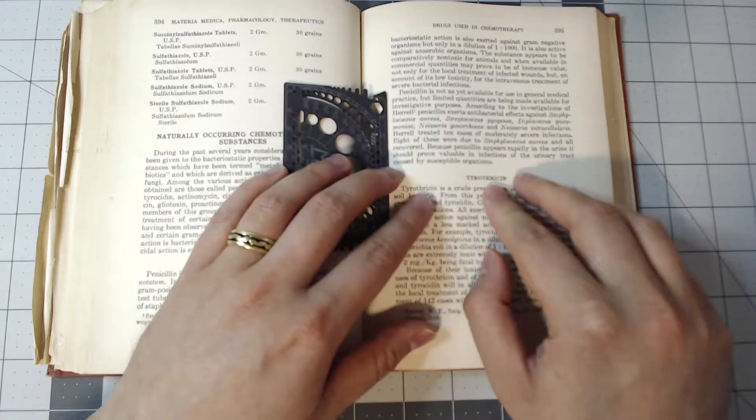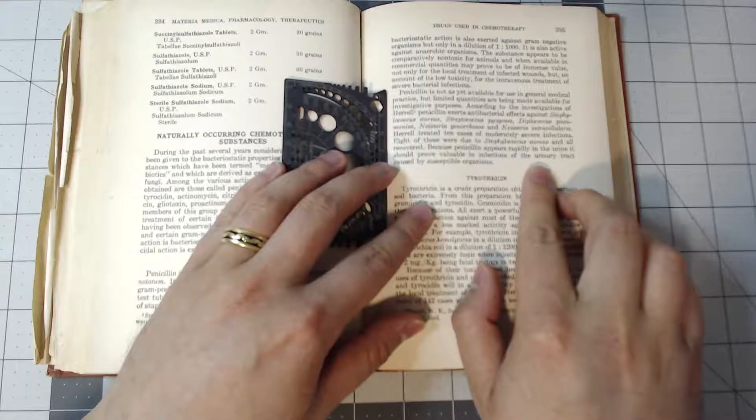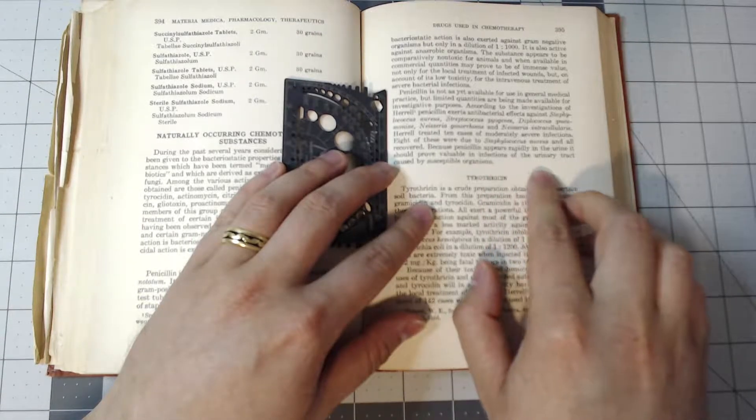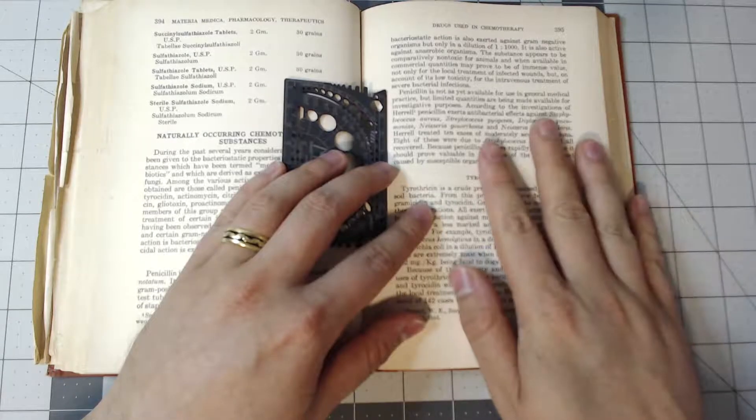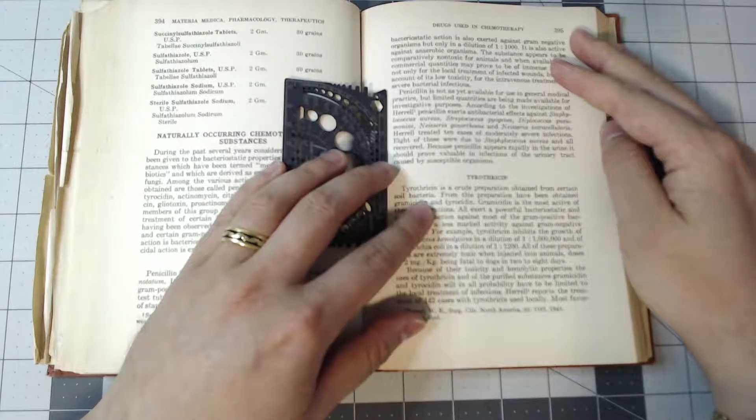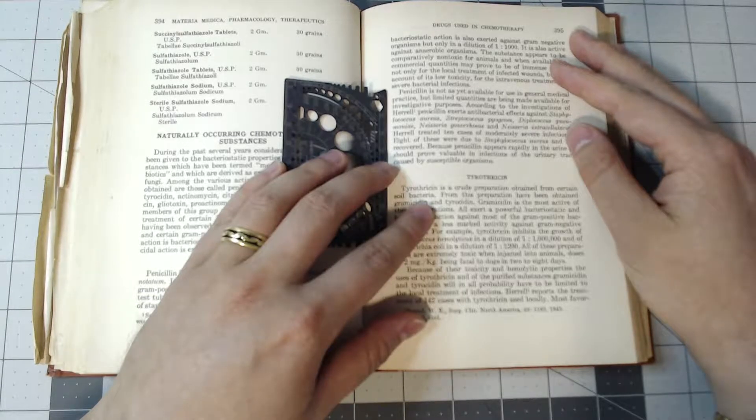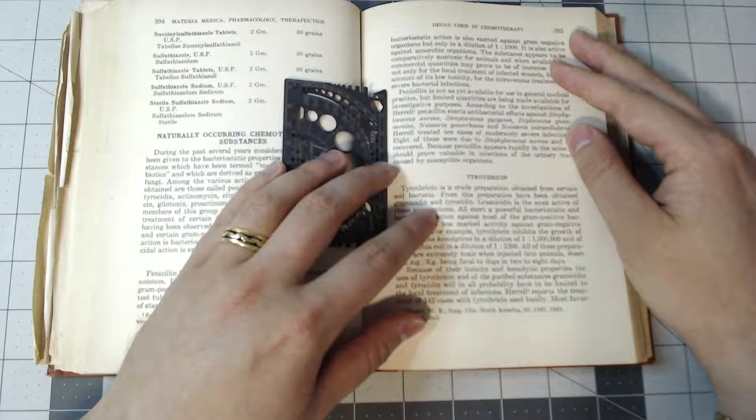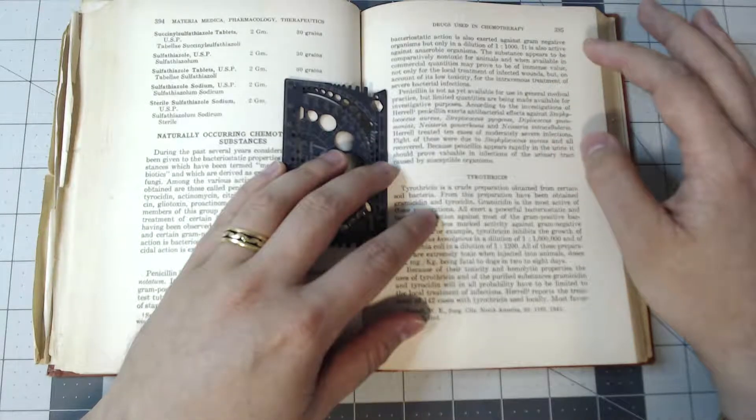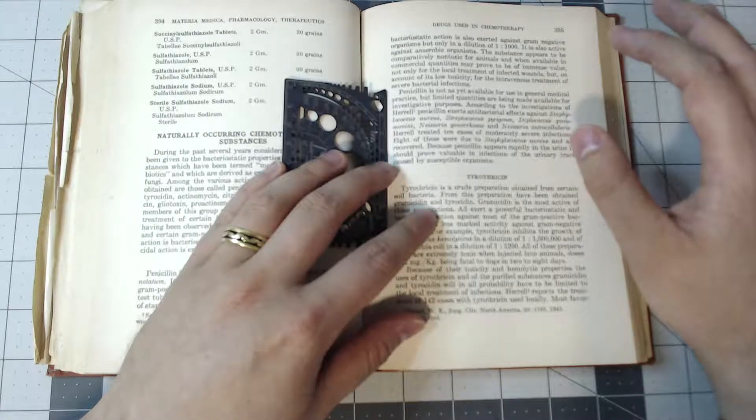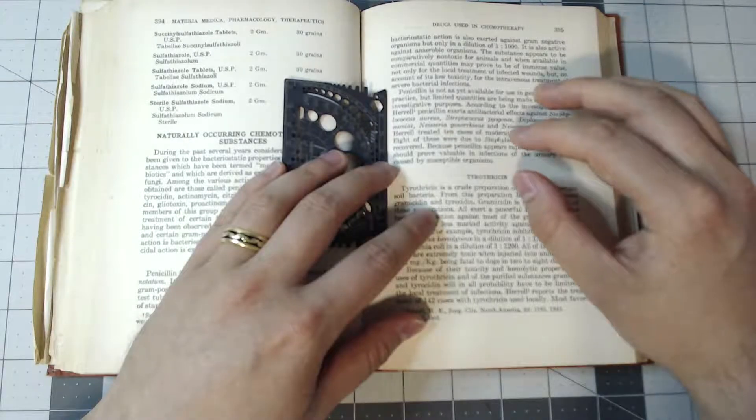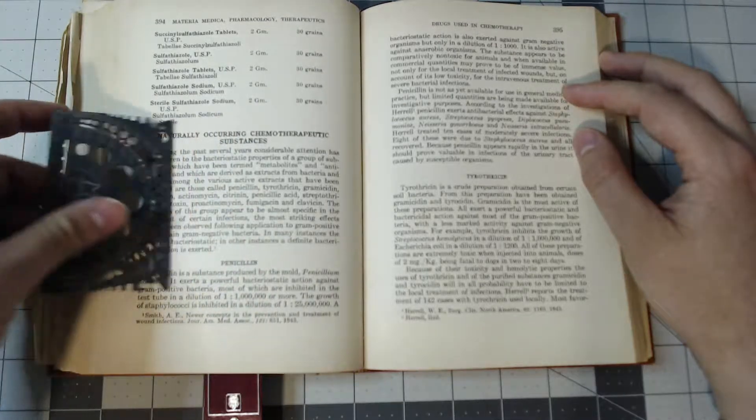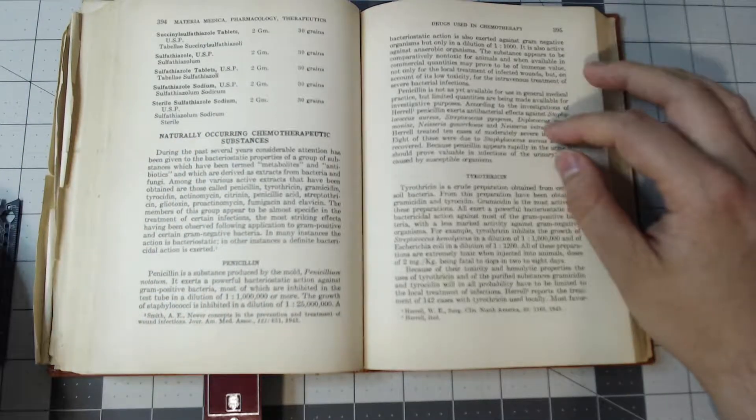I love this saying: because penicillin appears rapidly in the urine, it should prove valuable for infections in the urinary tract caused by susceptible organisms. This is an era where we're not even getting into bacterial resistance or antibiotic resistance. This is like a golden age here reading this. It's like, wow, this is cool stuff. When this comes out, it's going to change everything for us, and we aren't even aware of it at that time. It's amazing just seeing this here.